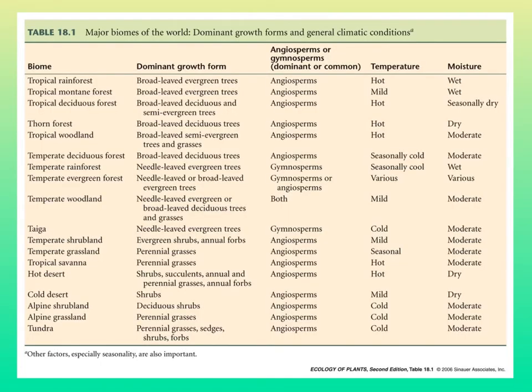In this table we can see the major biomes, the dominant growth form of plants that live there, whether angiosperms or gymnosperms are dominant, and what the temperature and moisture regimes are like. Tropical rainforest has lots of broad-leaved evergreen trees — meaning they don't drop their leaves at any particular time of year — mostly angiosperms, with warm temperatures and a lot of moisture.